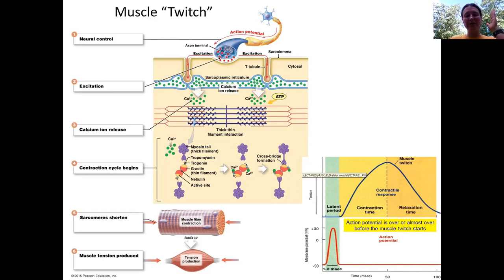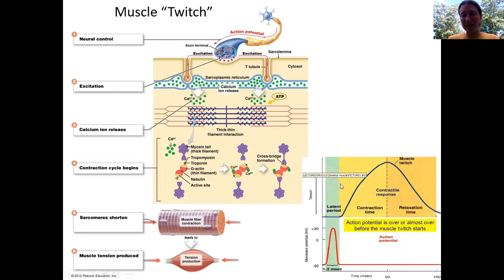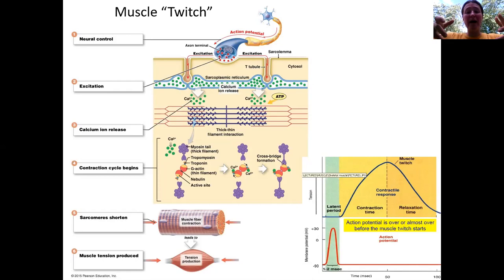A muscle twitch is a single stimulus from a motor neuron — a brief period of the action potential being generated, calcium being released, binding to troponin, removing tropomyosin, cross bridges being formed — and then we enter into the contraction phase where we slowly generate more and more tension. Of course, if we don't stimulate the muscle cell again, calcium is going to be pumped back out of the sarcoplasm, troponin will allow tropomyosin to roll back over those active sites on actin, cross bridges will not be able to form, and the sarcomeres will ultimately lengthen.